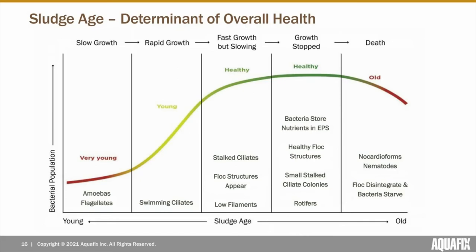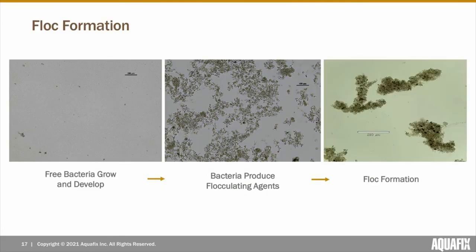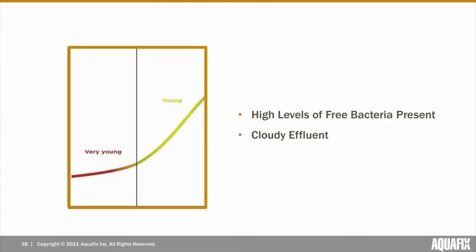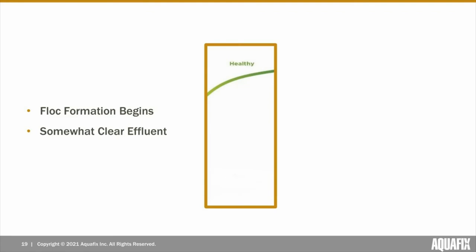Flock formation occurs when free bacteria grow and develop while consuming nutrients. Then, under ideal conditions, bacteria will begin to produce and secrete flocculating agents, mainly extracellular polymeric substances or EPS. These flocculating agents allow bacteria to stick together and form flock. At a younger sludge age, high levels of free bacteria will be present, resulting in low settling and a cloudier effluent, because bacteria need adequate retention time for flock formation to occur. As sludge age becomes older, flock begins to form as free bacteria reduce nutrients and flocculating agents.